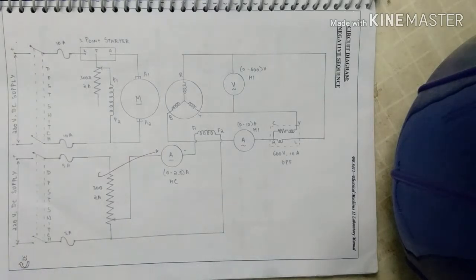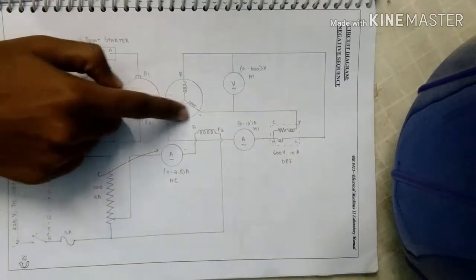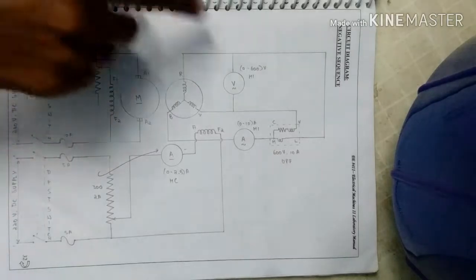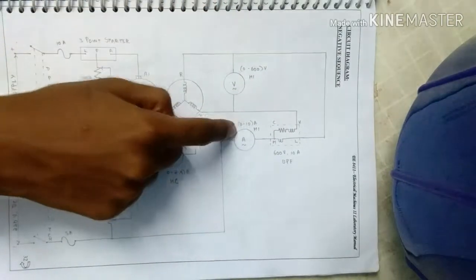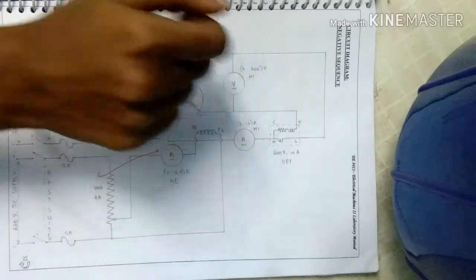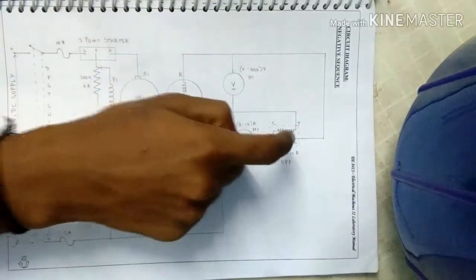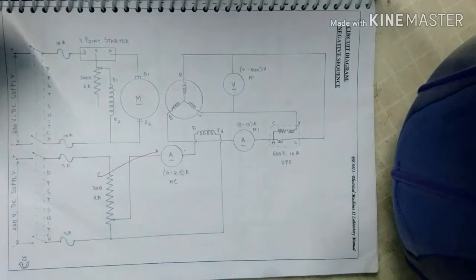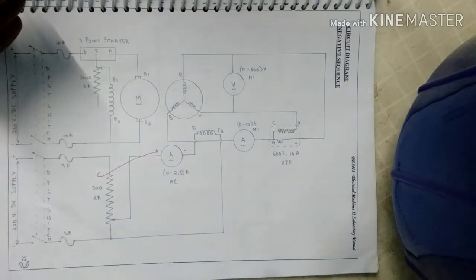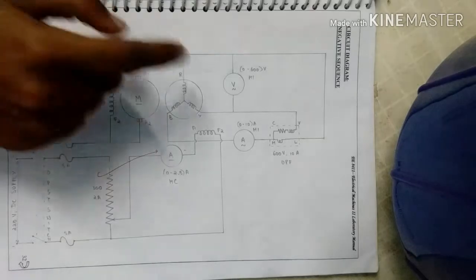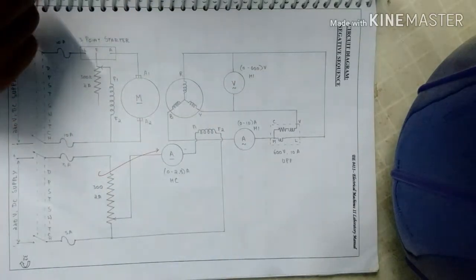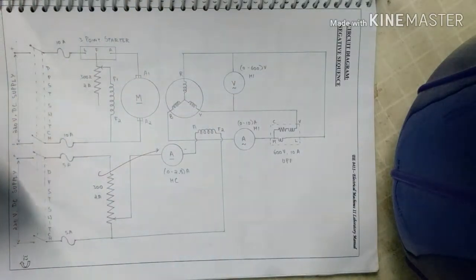The procedure for negative sequence: run the machine at the rated speed, short circuit the two phases of the alternator through an ammeter and the current coil wattmeter. Connect the voltage coil of the wattmeter and voltmeter between open phases and short circuit phases. Gradually increase the excitation such that the short circuit current does not exceed its rated value and tabulate the readings.